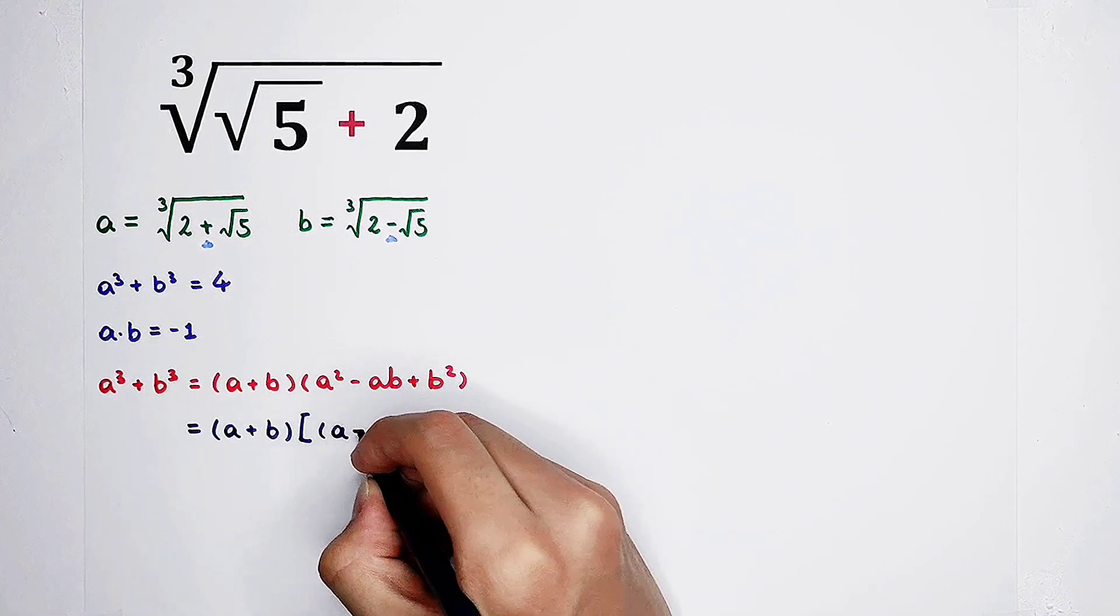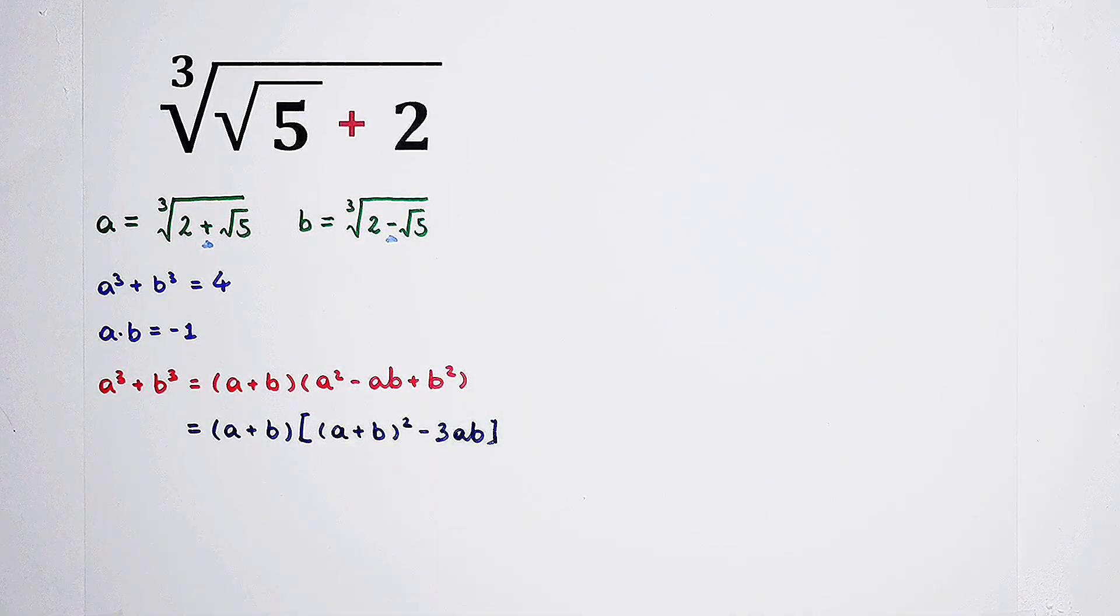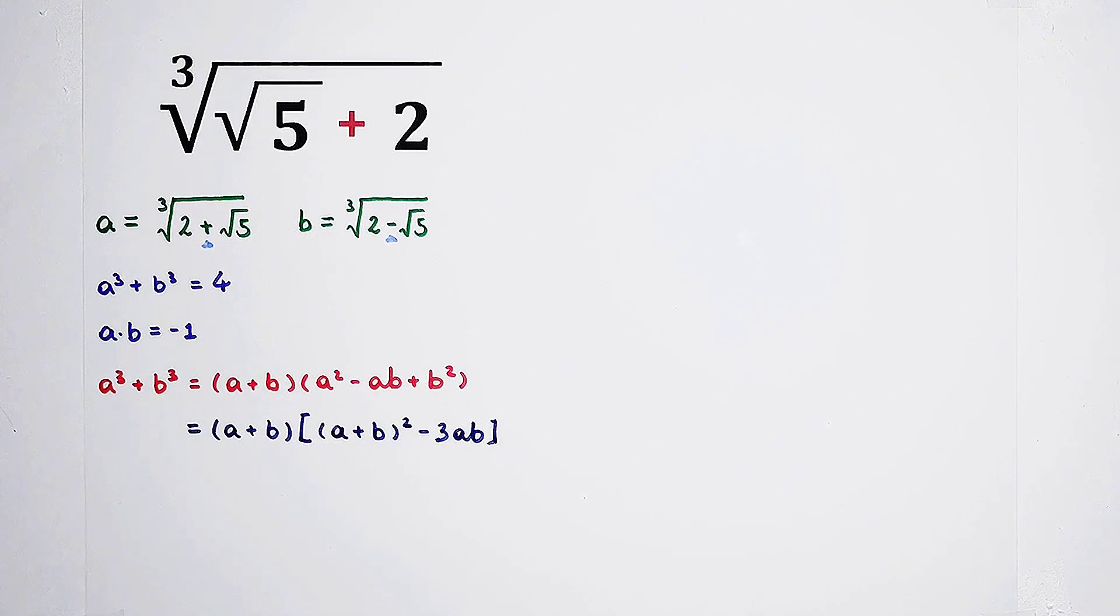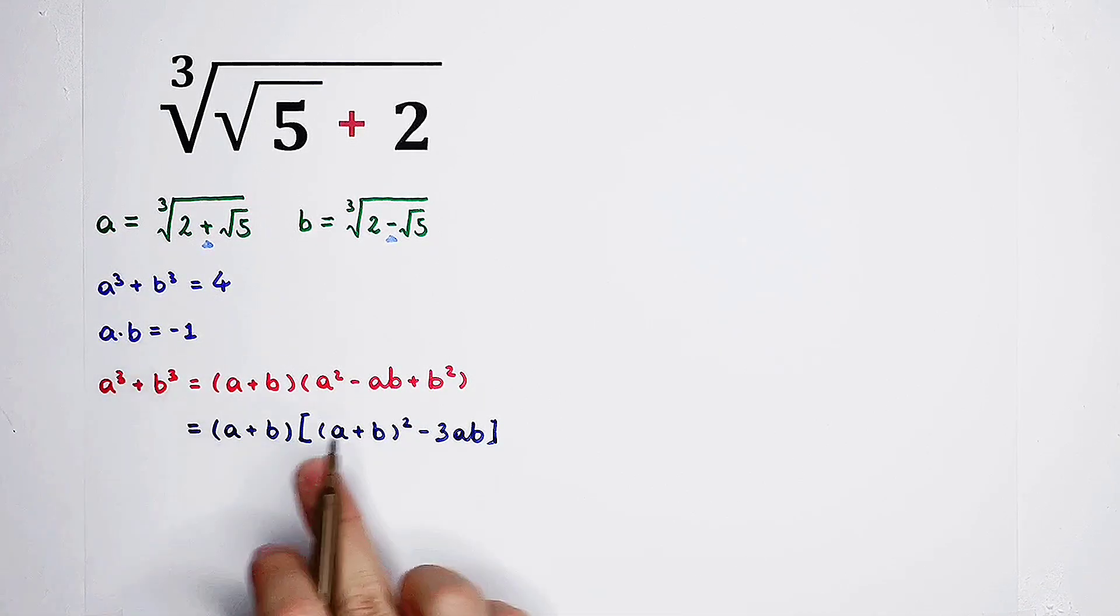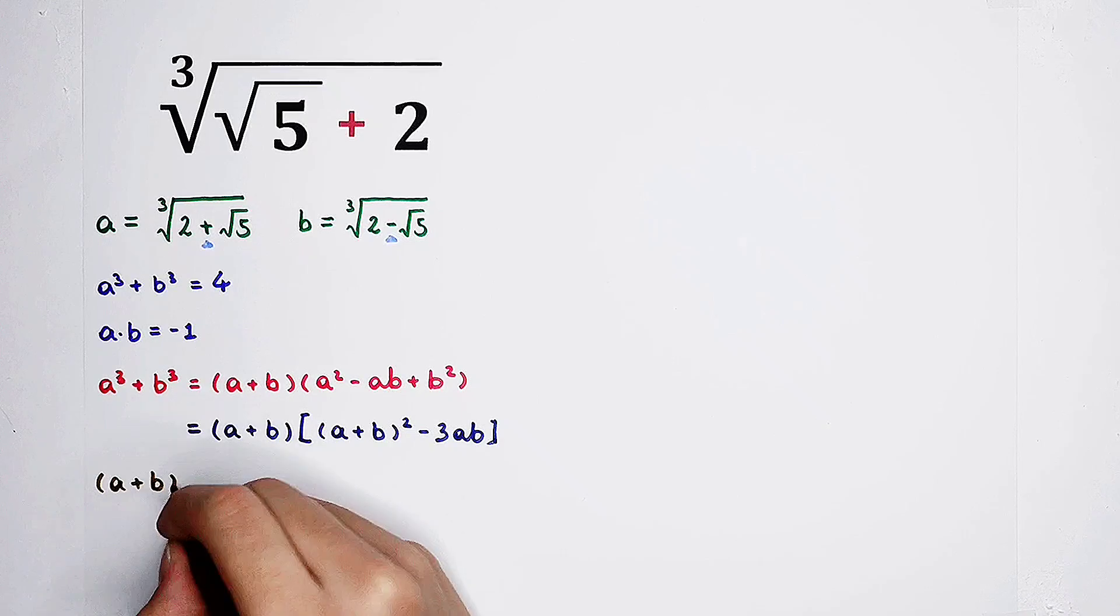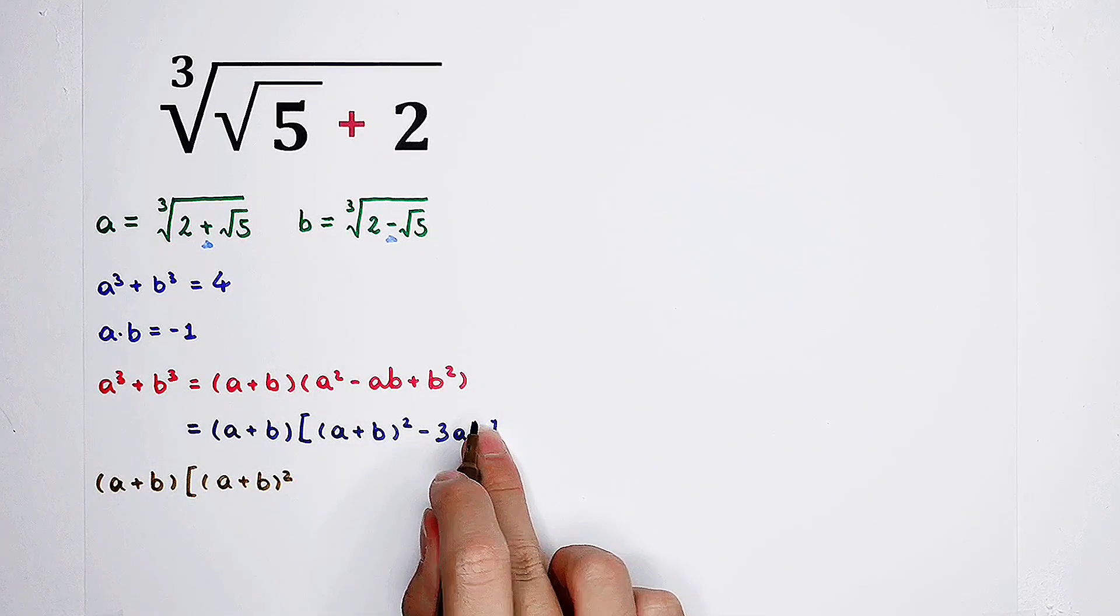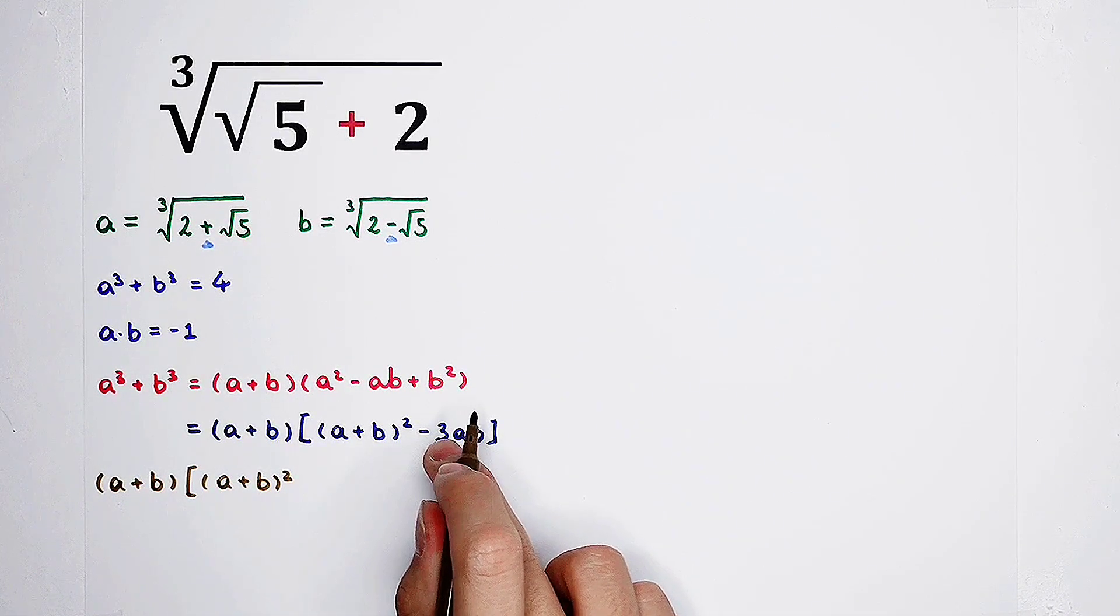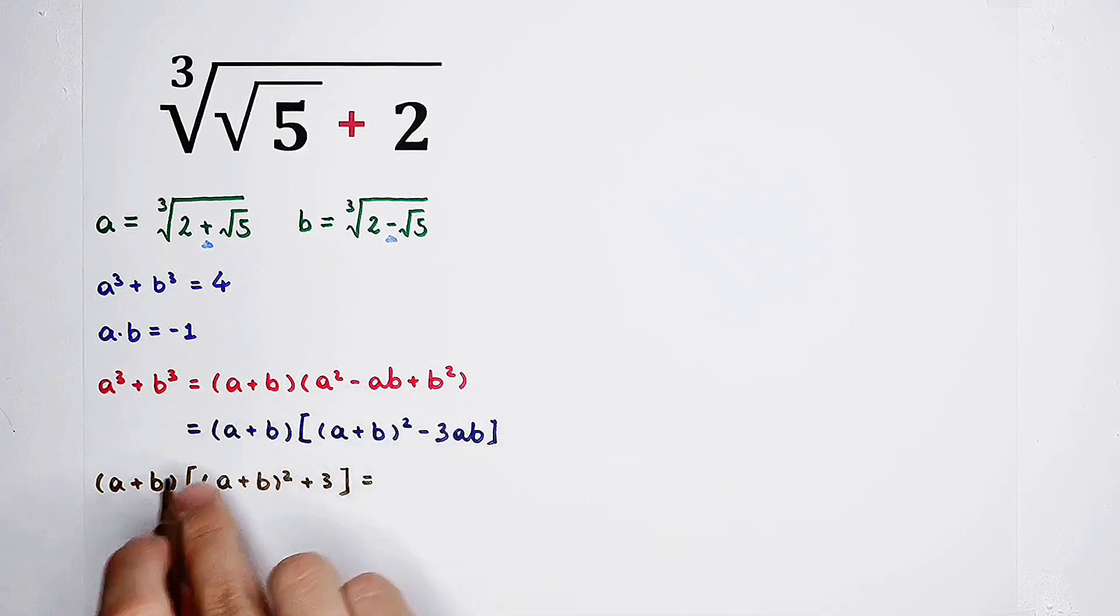Since we know that the value of a cubed plus b cubed is 4, so now I'm going to transform the form. Now, it can be written as a plus b squared minus 3 times ab. Since we know the values of a cubed plus b cubed and a times b, so then, there's only one thing that we don't know. It is a plus b. Minus 3ab. A times b is negative 1. Minus 3 times negative 1. It is minus minus 3. Minus negative 3 is positive 3. Plus 3.